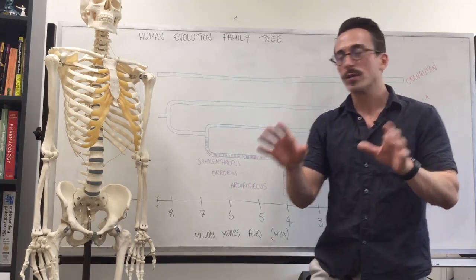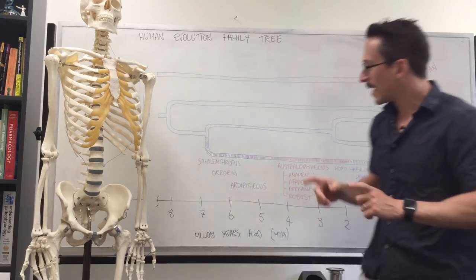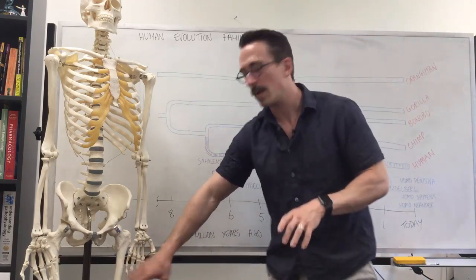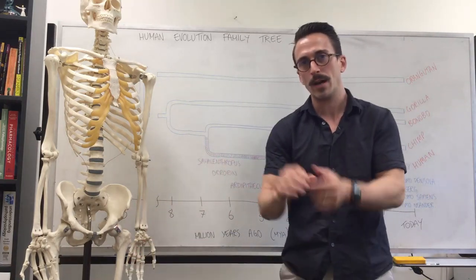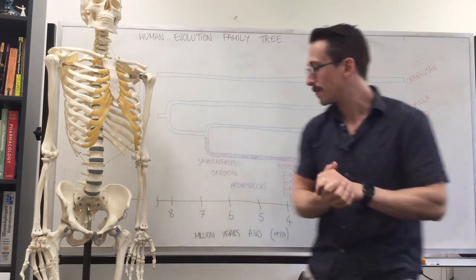For animals that walk on all fours, the foramen magnum is not directly underneath the skull. That's for Sahelanthropus and Ardipithecus. For Orrorin, we only have a femur, but we can see by that femur that the most proximal portion is very similar to ours. Again, another indication of bipedalism.